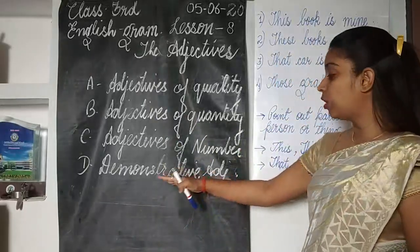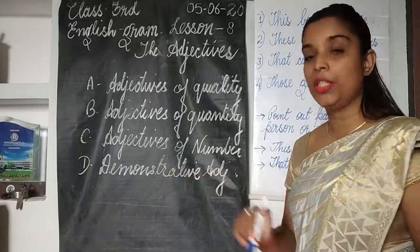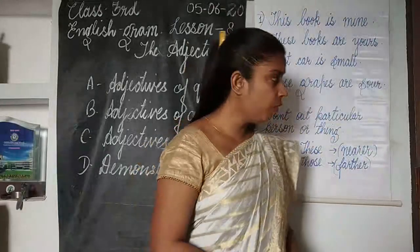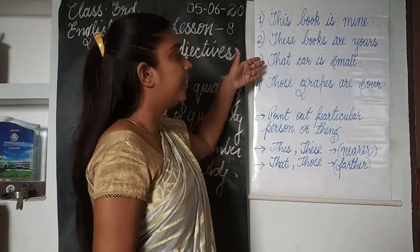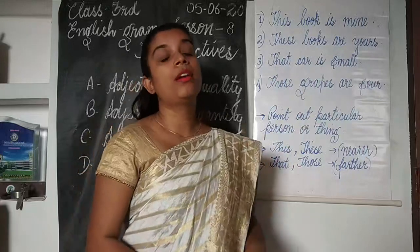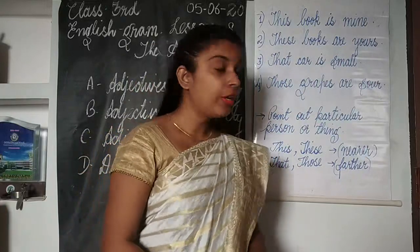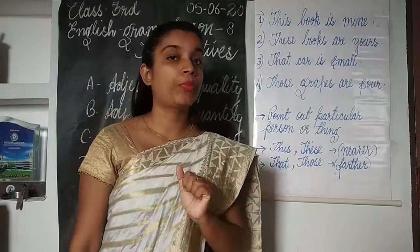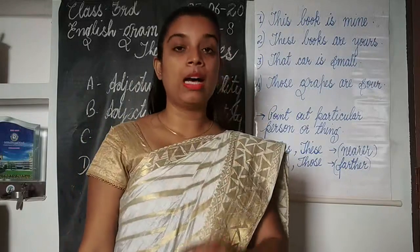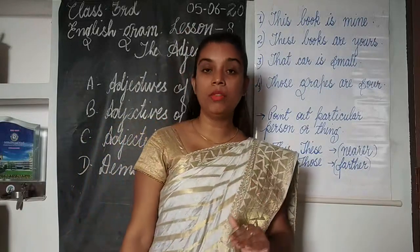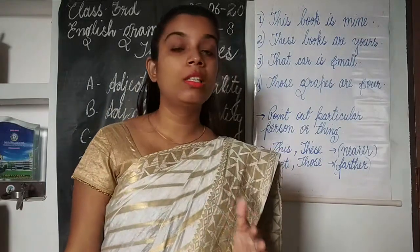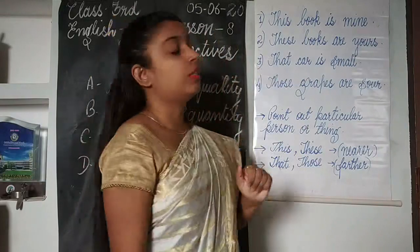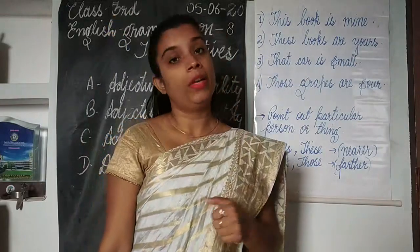Today I am going to explain demonstrative adjectives. Four words — this, that, these, and those — are demonstrative adjectives if they point out a person, place, animal, or thing. These four words are adjectives which point out certain persons, places, animals, or things, and these four words are said to be demonstrative adjectives.